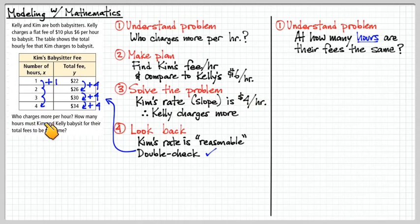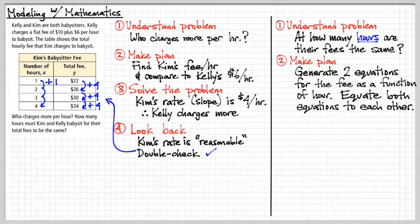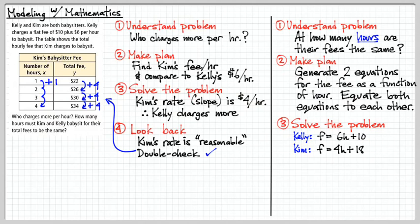Let's look at the second problem now. How many hours must they babysit before their fees are the same amount? So here we're going to generate two equations. We're going to generate basically a function that calculates the fee as a function of hour. And then we're going to set both of those equations equal to each other. So let's start with Kelly. It says that Kelly charges a flat rate of $10 and $6 per hour from there. So I'm going to turn that into an equation. The fee of Kelly is $6 every hour, so that's our slope times the hour, plus a flat rate or initial rate of $10.